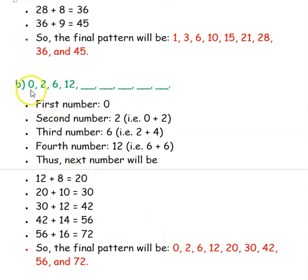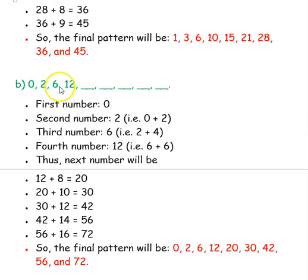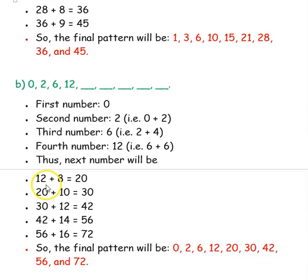Now let us see the second number pattern: 0, 2, 6, 12. First number is 0, second is 2. If you add 2 to 0 you get 2. Then with this 2, if you add 4 you get 6. Next, if you add 6 you get 12. Each time we add 2 more than the previous addition. Now we have added 6, so next we add 8: 12 plus 8 is 20.